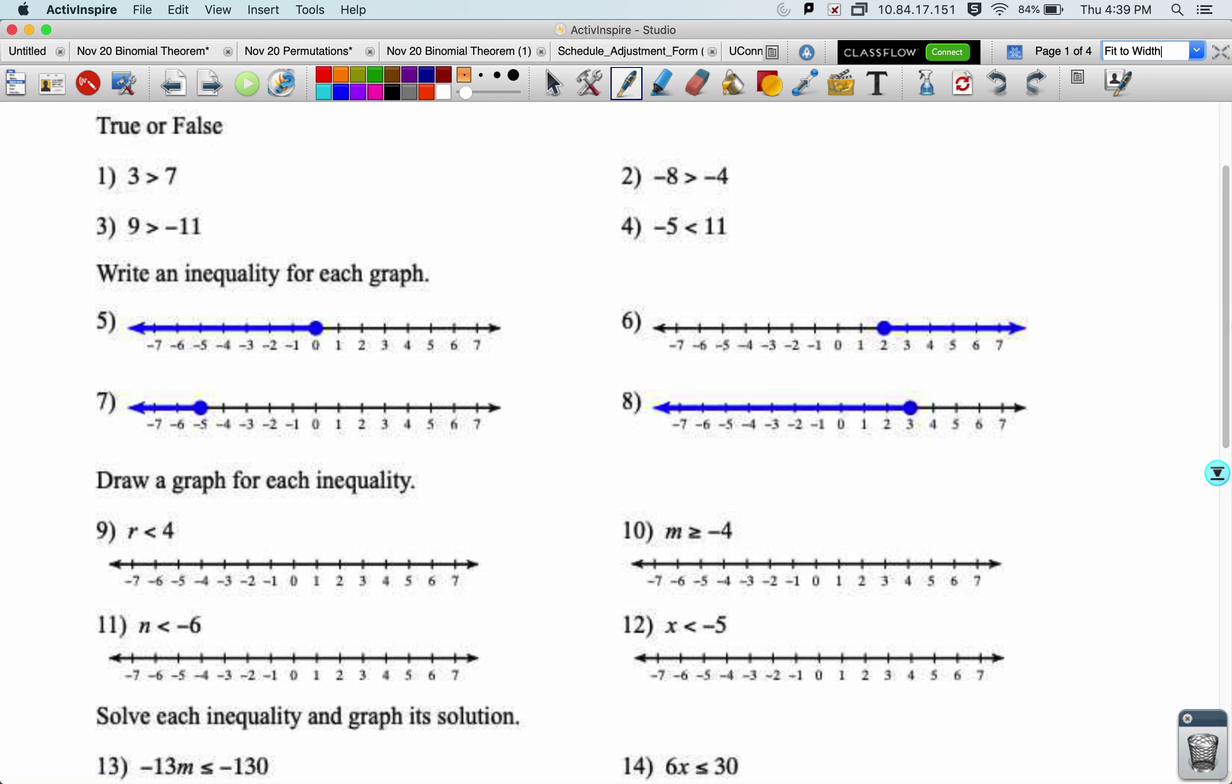So all that really matters is that the inequality in the middle is facing the right direction. As you can see in this first one, it's facing the wrong direction. The way we can think about it is it being an alligator that wants to eat the bigger number. Here he's eating the smaller number, and that is not the way that he should be facing. When it's a positive and a negative, he always wants to eat the positive, because positives are always better than negatives.